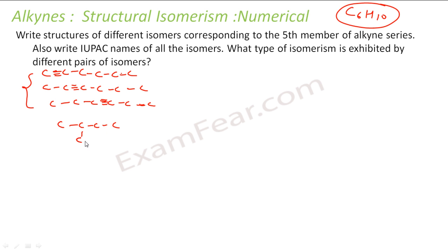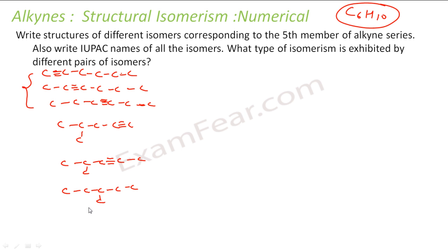For branched isomers, with a 5-carbon chain and one methyl branch, the triple bond can be at positions 1 or 2. Moving the branch carbon to another position gives additional options. With a 4-carbon chain and two methyl groups at position 3, the triple bond can only be at position 1. In total, there are several possible branched isomers.